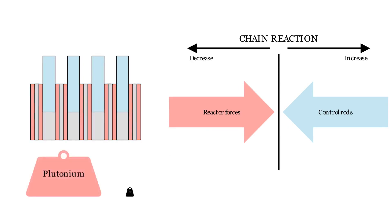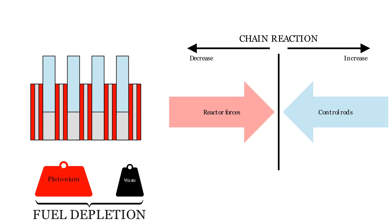While producing power, the reactor consumes plutonium and creates waste. This phenomenon is called fuel depletion. By changing the quantity of atoms inside the reactor, the forces of each phenomenon on the chain reaction change.